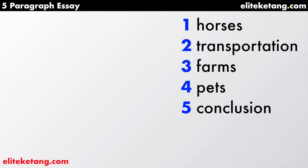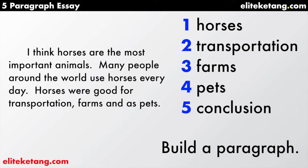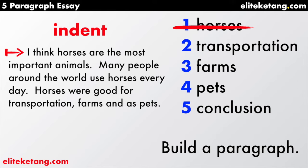Let's take a look at our outline again, and now we're going to take each number and make one paragraph. This paragraph is for number one — the answer. 'I think horses are the most important animals. Many people around the world use horses every day. Horses were good for transportation, farms, and as pets.' Remember to indent the start of your paragraph. And that is one paragraph finished.